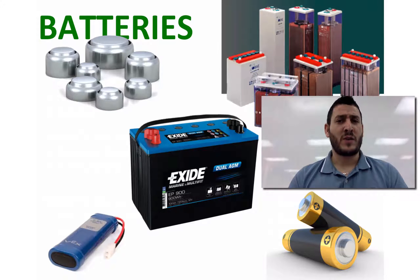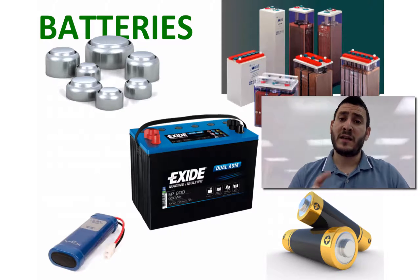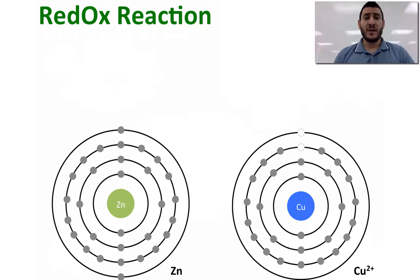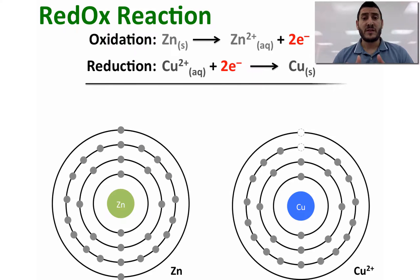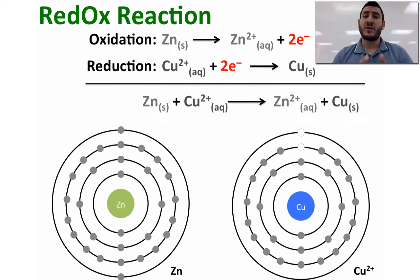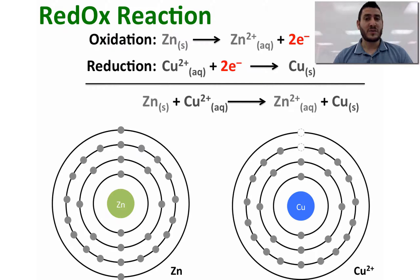Today I will be talking about how a battery works and what it is made from, but before that let's discuss the redox reaction. A redox reaction is the sum of two half equations: the oxidation and the reduction. In this example, I'm showing the oxidation of zinc, where zinc is losing two electrons, and the reduction of copper(II), which is gaining the electrons lost by zinc — and therefore you have a transfer of electrons between zinc and copper.